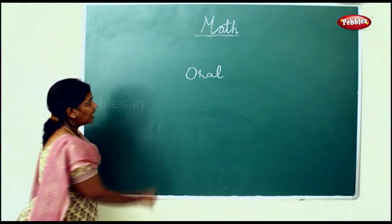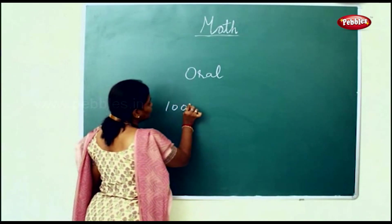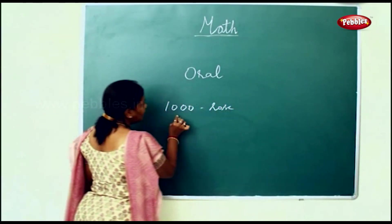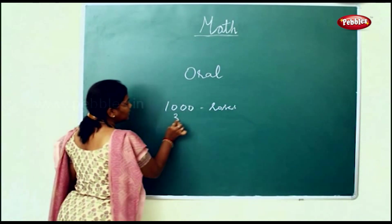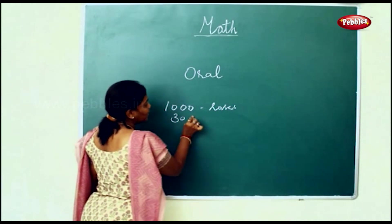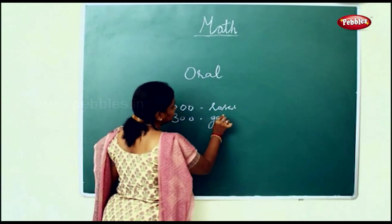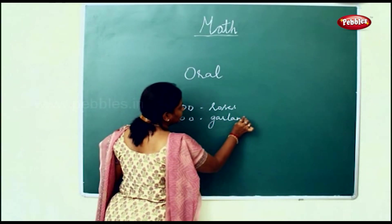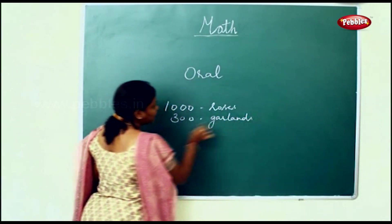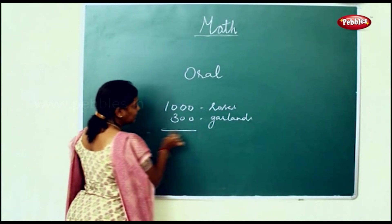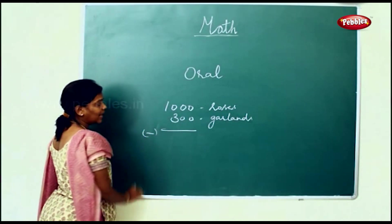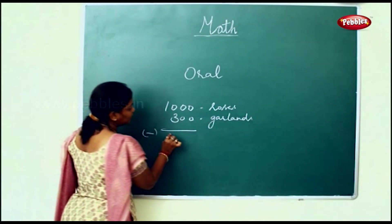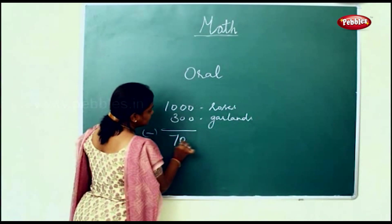In a flower shop, there are 1000 roses. Of them, 300 are used to make garlands. We'll have to find the remaining left out. Left out means you have to minus it. So 1000 minus 300 will be 700.